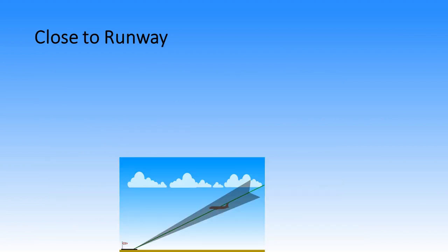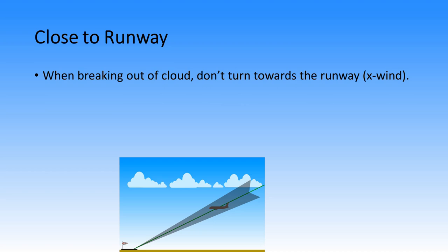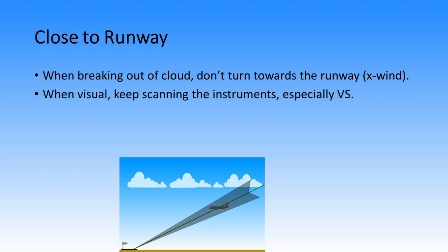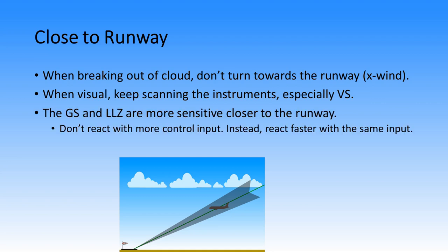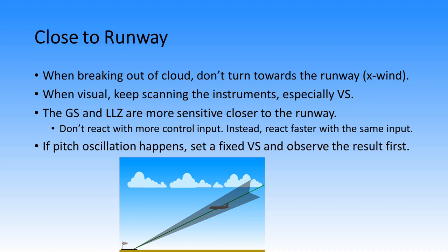When close to the runway and breaking out of cloud, resist the temptation to turn towards the runway if you have crosswind — that will make the aircraft drift off the localizer. When visual, keep scanning the instruments, especially the vertical speed. In very foggy weather it's very easy to start deviating from the glide slope if you don't scan enough. The glide slope and localizer diamonds are more sensitive the closer you are to the runway — don't react with more control input; instead, react faster with the same input, otherwise you will get excessive deviations. If pitch oscillations happen, set a fixed vertical speed, don't change it, observe it, then modify.